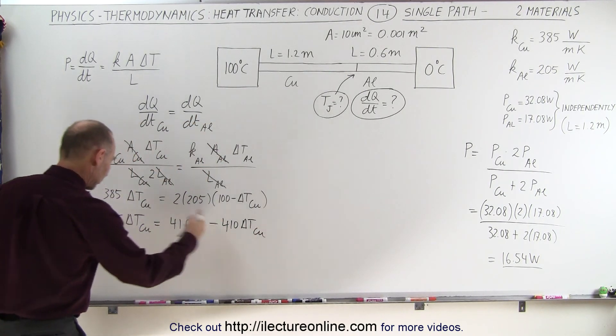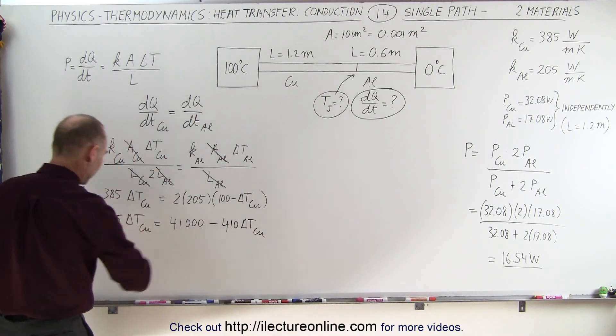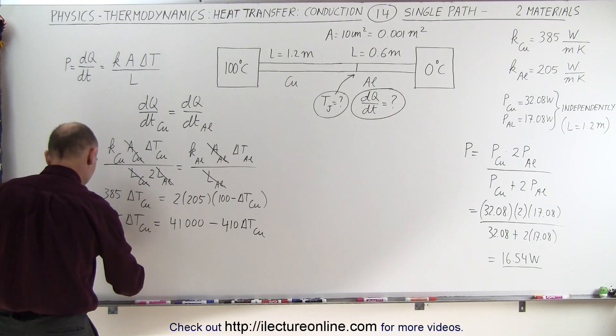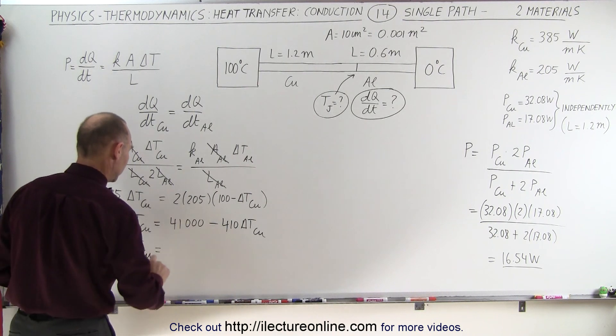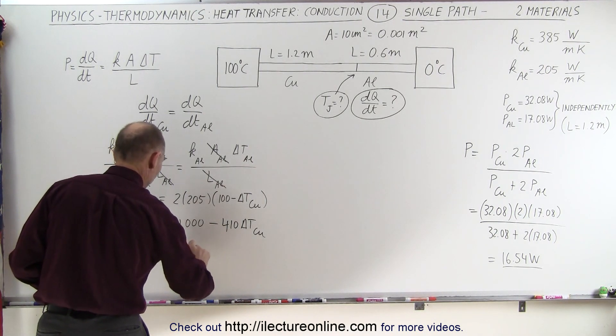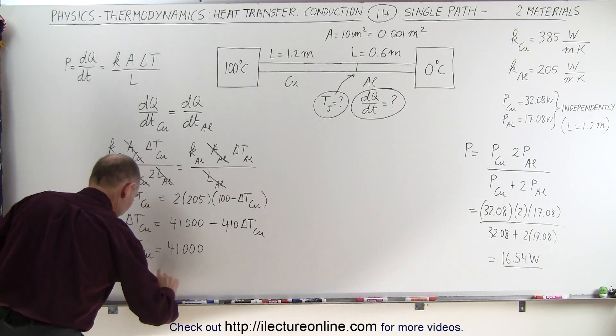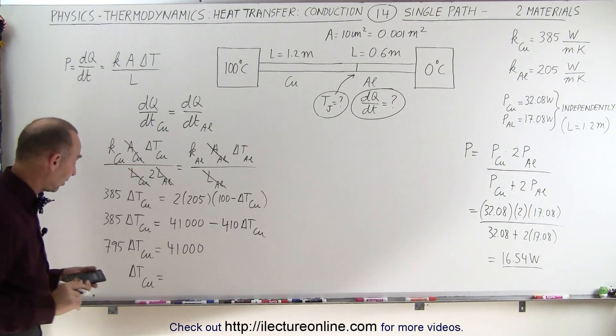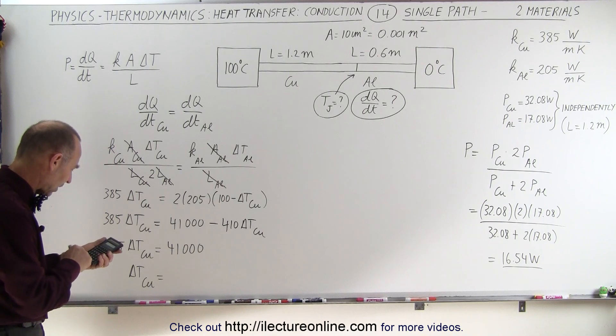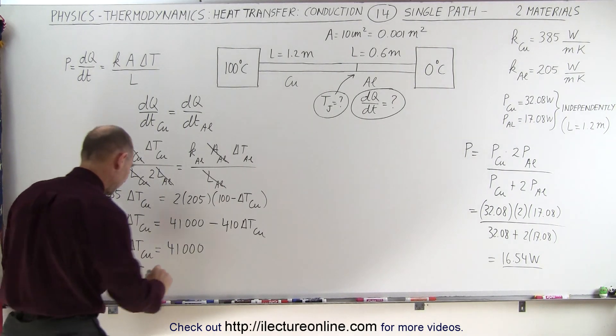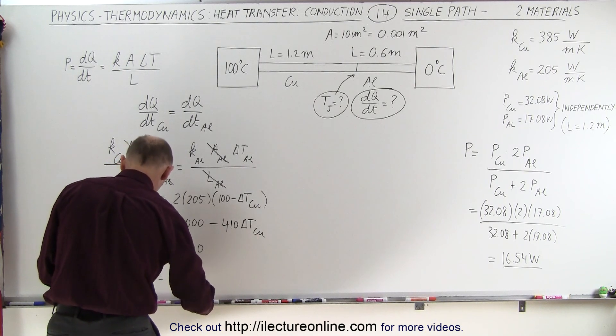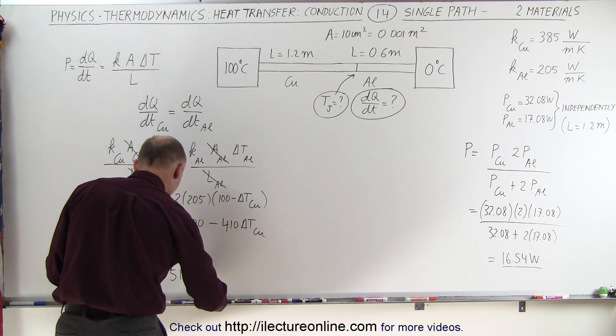And now we move this across over here, because now we only have one unknown, that's 410 add to that, that's 795 delta T of the copper is equal to 41,000, which allows us to calculate the difference in the temperature across the copper section. So we have 41,000 divided by 795, and we get 51.57 degrees.